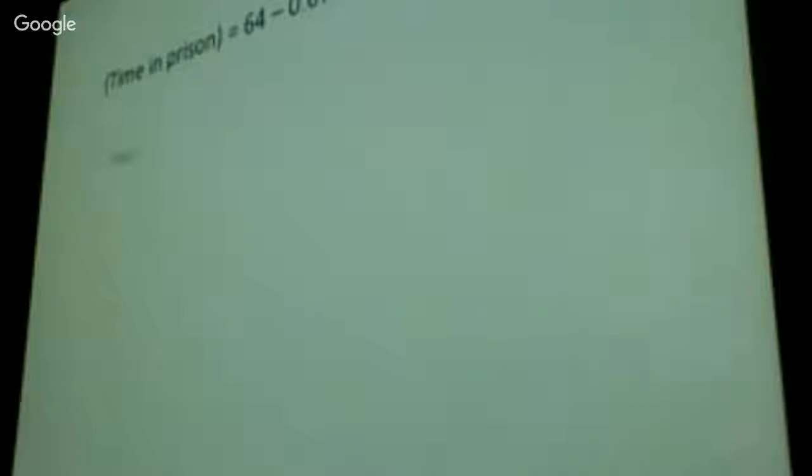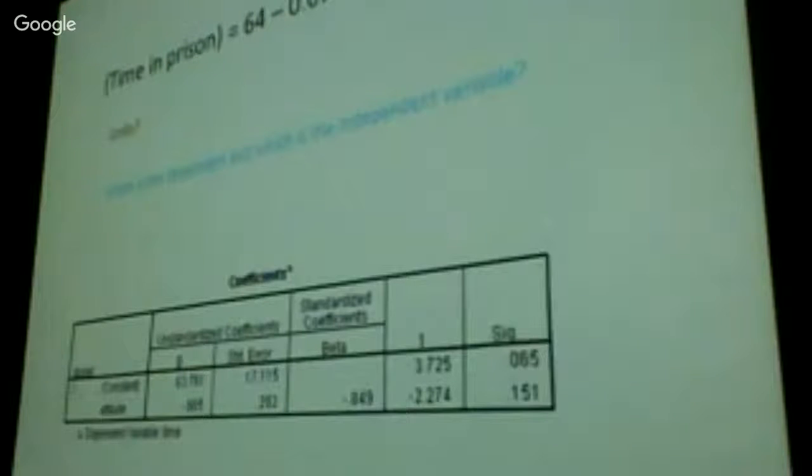So this is my equation now. This means I can predict your time in prison using this equation here, where x is your attitude score. Fantastic. Magical. We've solved criminal justice in Canada. Everything is great. So that's the official thing. What are my units here? Well, the units are going to be whatever the units were that I used in my analysis. So let's say I was using months before. So now it's going to be months.